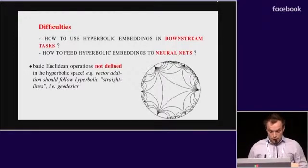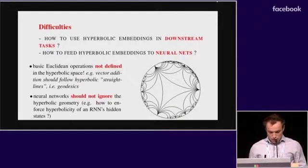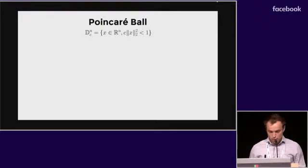This is difficult because basic Euclidean operations are not defined in the hyperbolic space. For example, vector addition should follow hyperbolic straight lines or geodesics. Second, neural networks should not ignore the hyperbolic geometry. For example, if you are dealing with a recurrent neural network with hidden states that are living in this hyperbolic space.